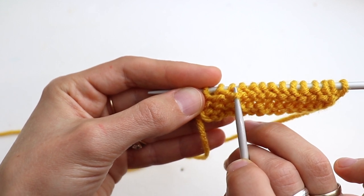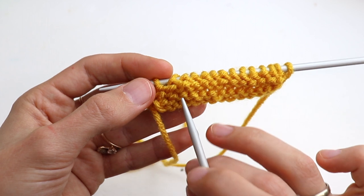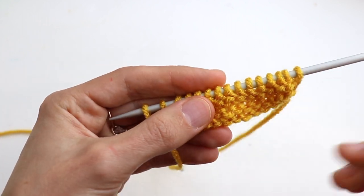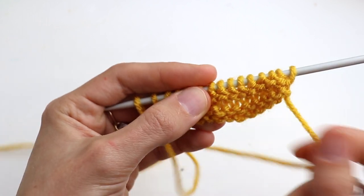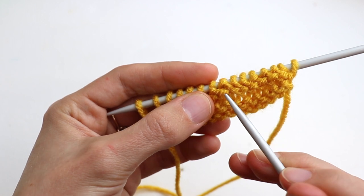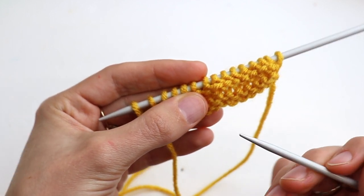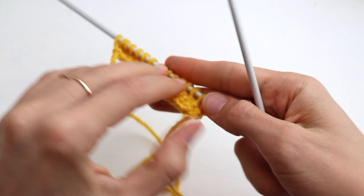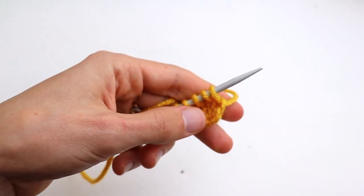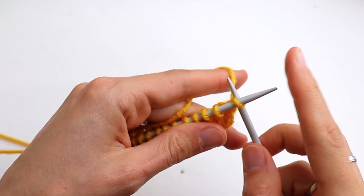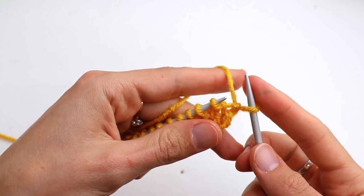So again, here is the purl stitch and here is the second ridge underneath. I don't know if you're a beginner, you may place stitch markers in each. So let's get started.